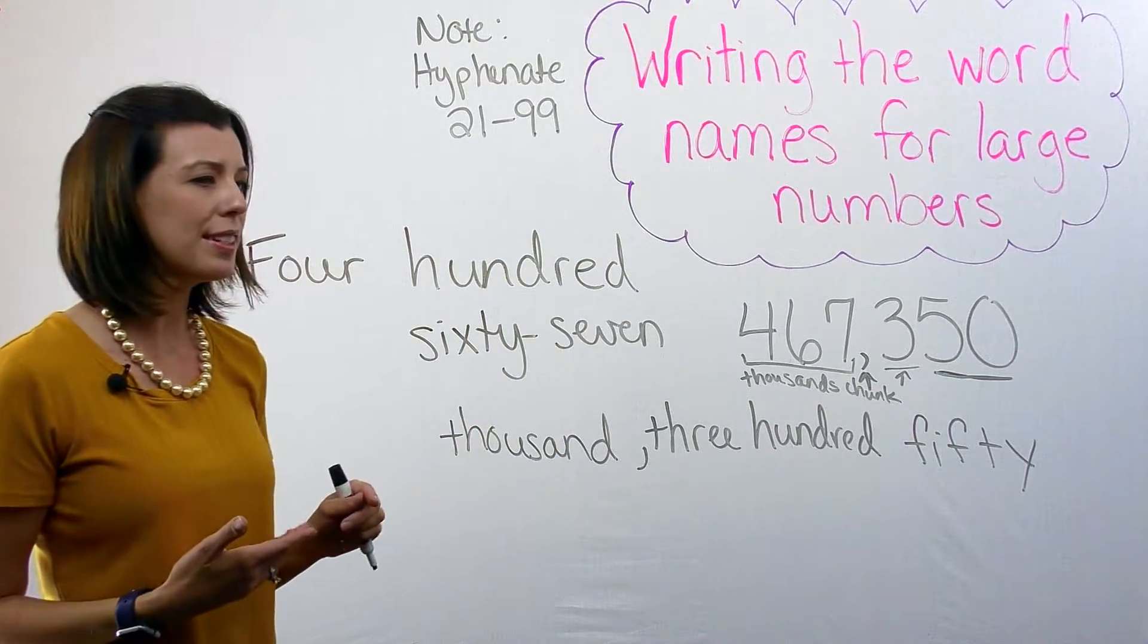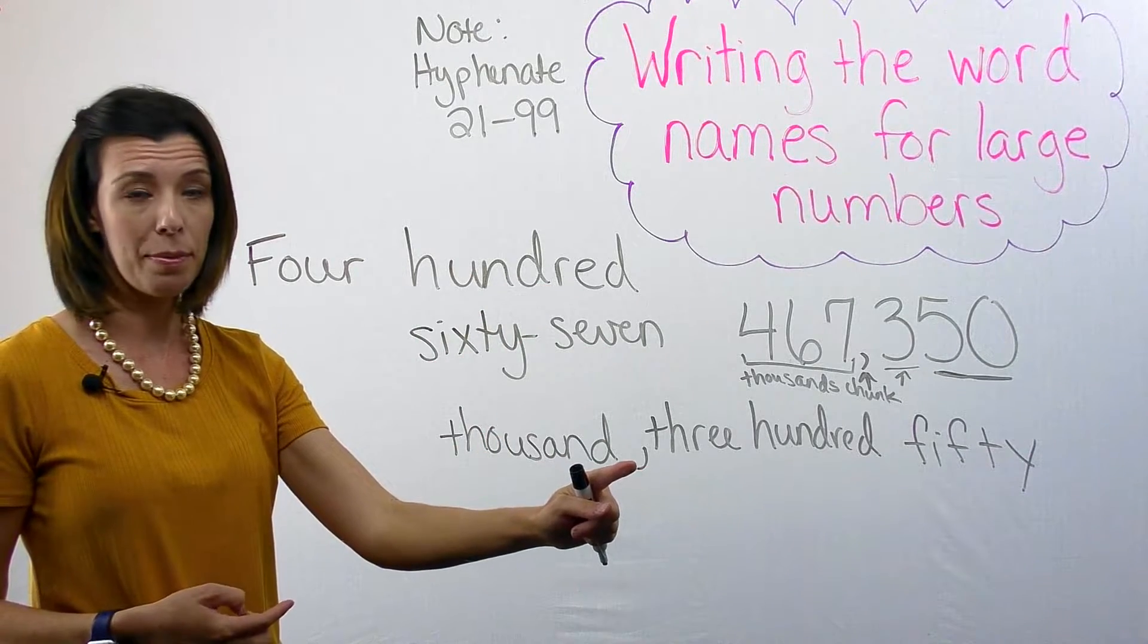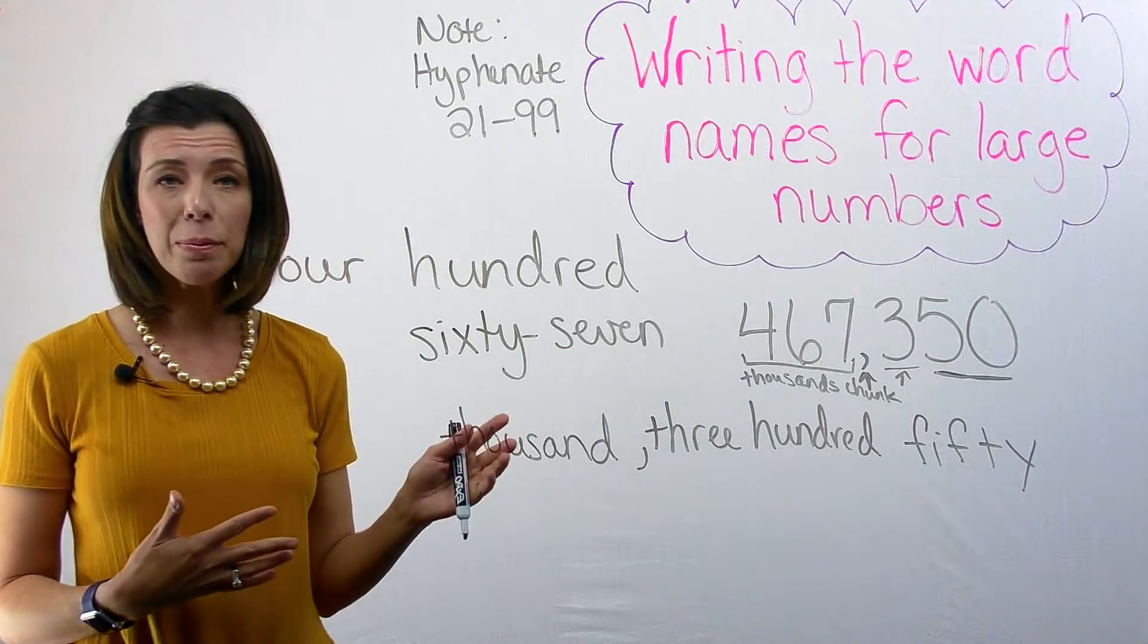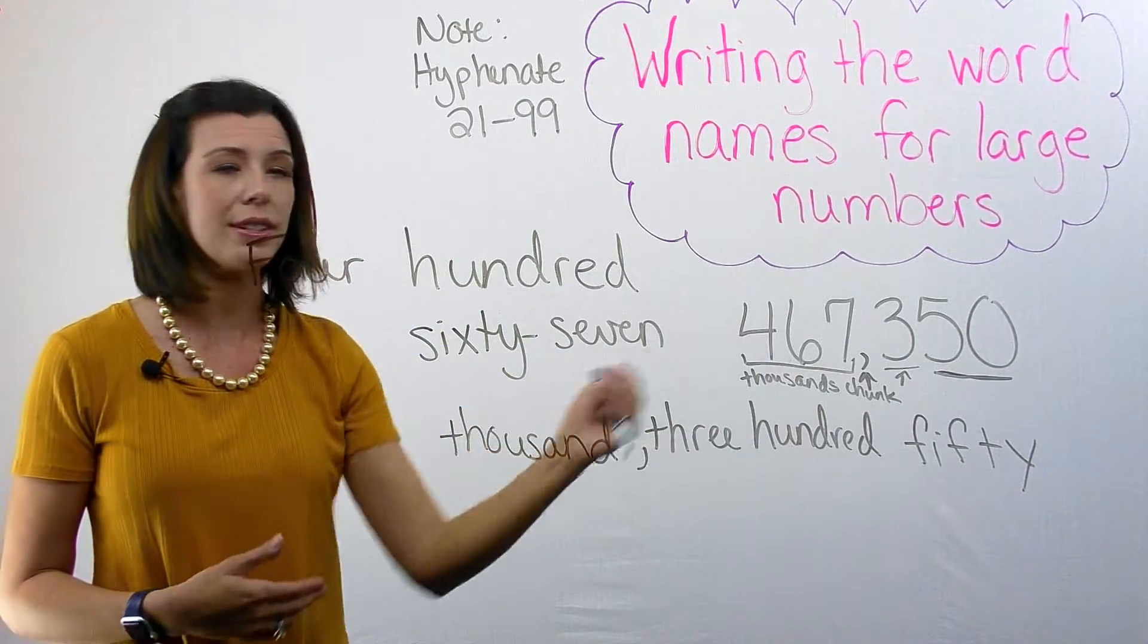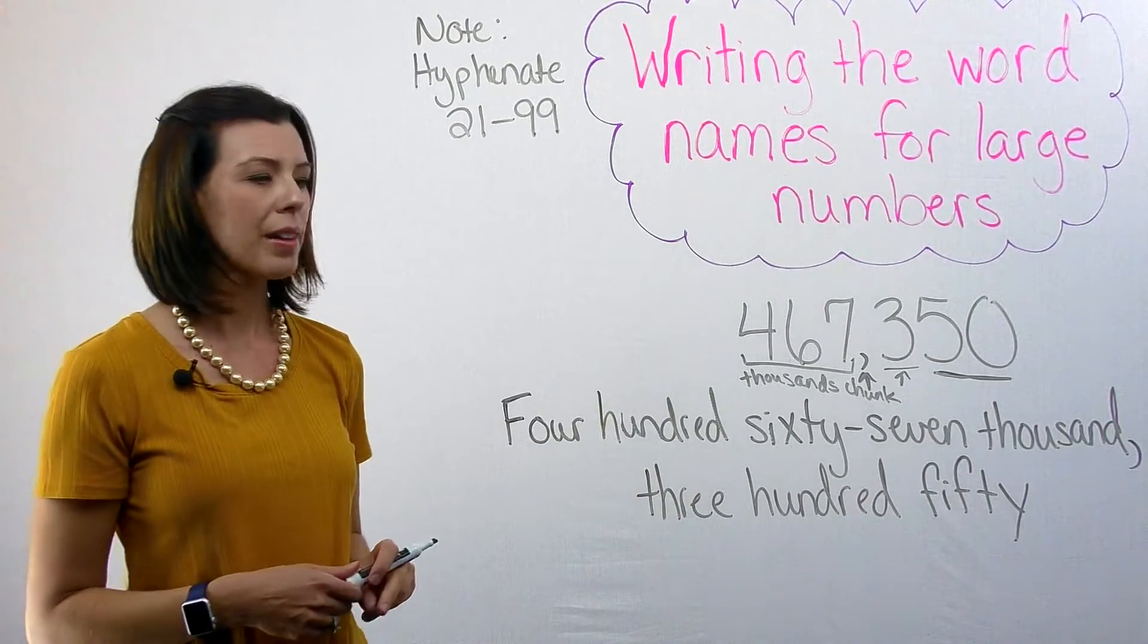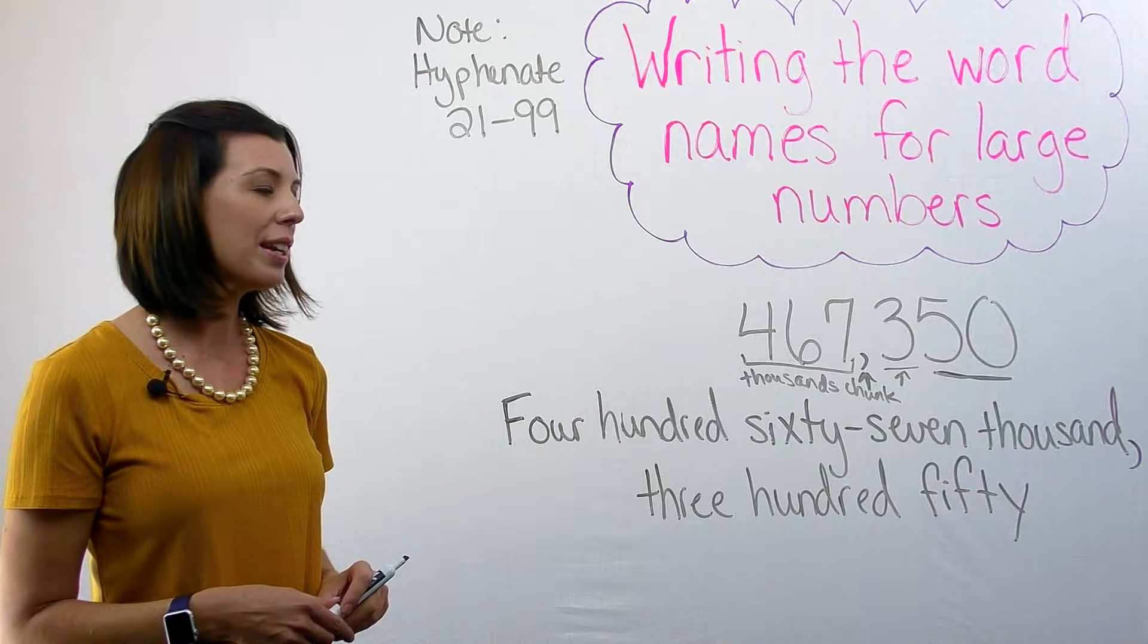So when I'm all done with this, you can see that I have 467,000 with my comma, 350. And that would be how I would write the word name for this number right here. Let me make that a little prettier, so you can see my finished product. Again, I have 467,350.